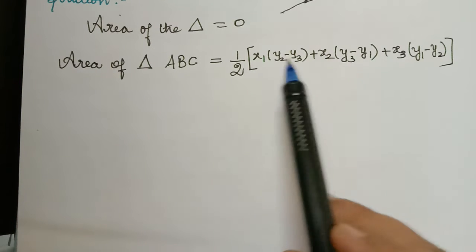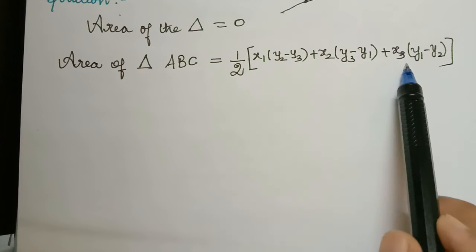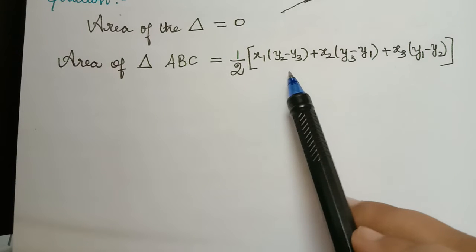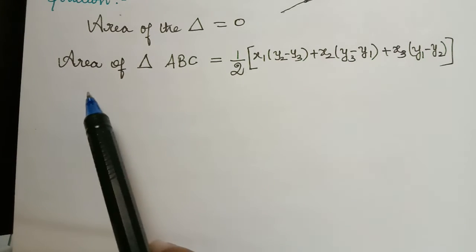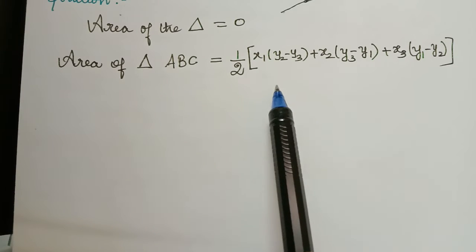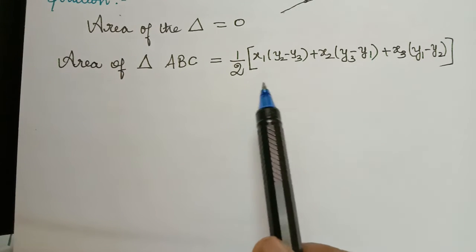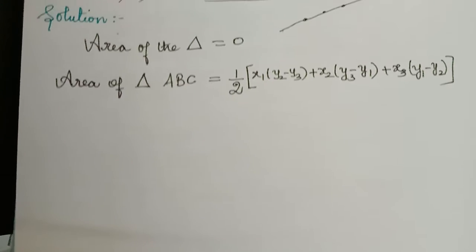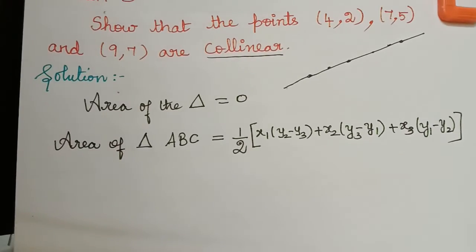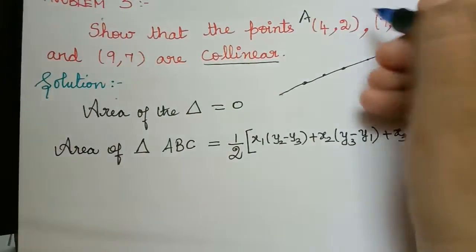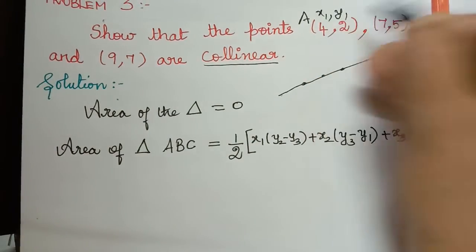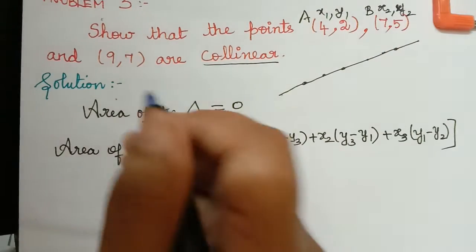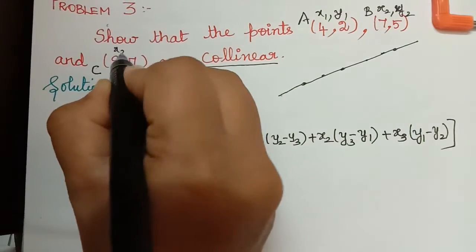This is the area of triangle ABC. We have to substitute the values of x1, x2, x3, y1, y2, and y3 into these places and get an answer of zero. If we prove that the area of the triangle is equal to zero, then we will prove that the three points are collinear. Let us name the three given points: let A have coordinates (x1, y1), B have coordinates (x2, y2), and C have coordinates (x3, y3).